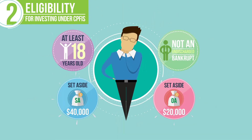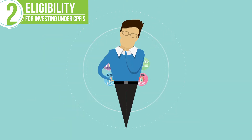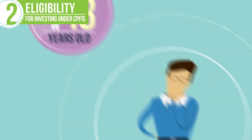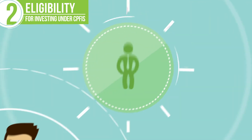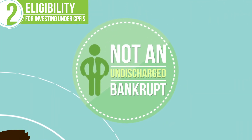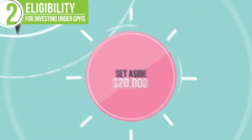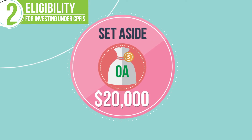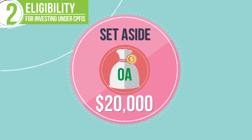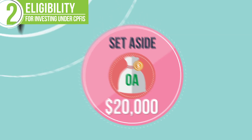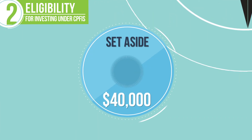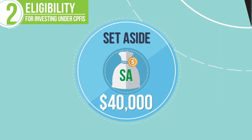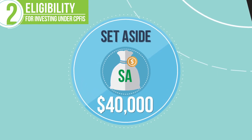You can invest under CPF-IS if you are at least 18 years old and not an undischarged bankrupt. You can invest your Ordinary Account savings after setting aside $20,000 in your Ordinary Account. You can invest your Special Account savings after setting aside $40,000 in your Special Account.